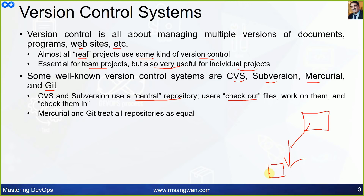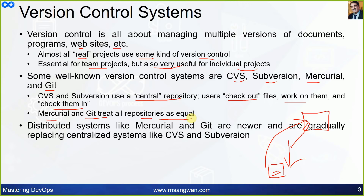Users work on the code and check it back in. Mercurial and Git treat all repositories as equal — they use a decentralized or distributed concept where every system can have its own repository, work independently, and then merge. Distributed systems like Git and Mercurial are newer and are gradually replacing old centralized systems like CVS and Subversion.